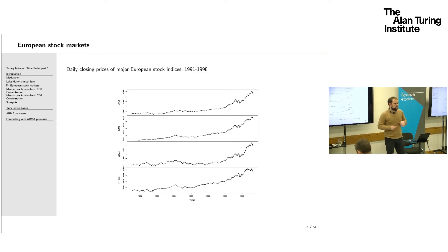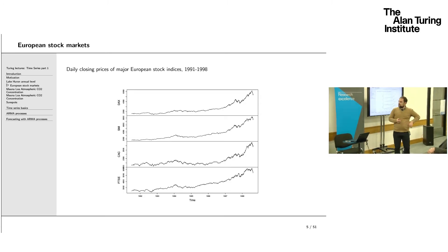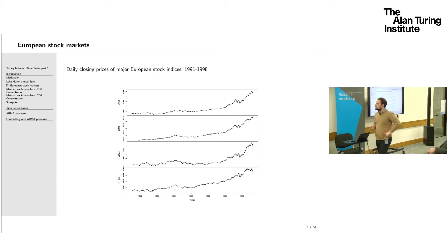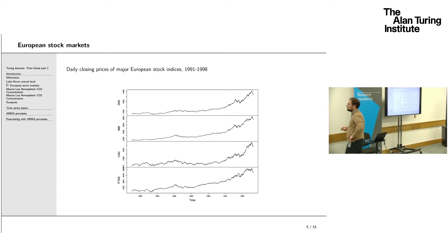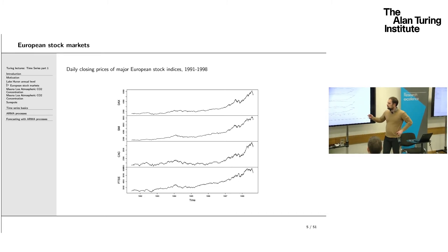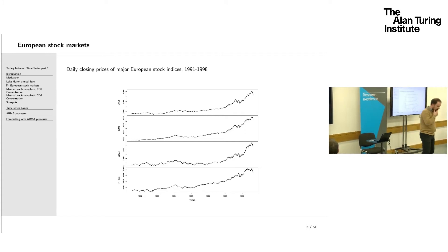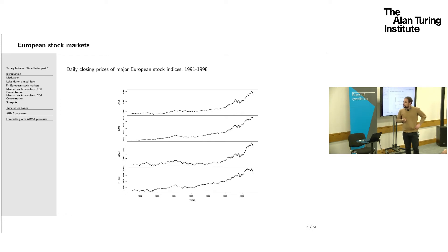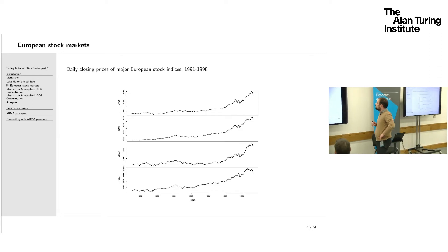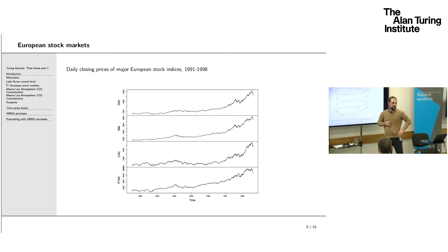Here's another example from finance: daily closing prices of four major European stock indices — the German DAX, Swiss SMI, French CAC, and the UK FTSE. There is an evident increasing trend, with oscillations potentially being slightly different at the end of the series compared to the beginning.